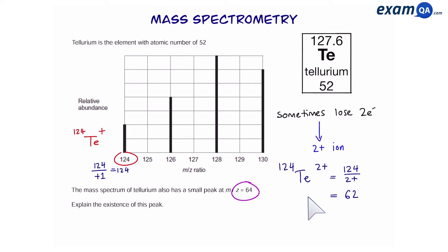In this question it says explain why there's a peak at m/z 64. So this could be because of a 128 Tellurium with a charge of 2+. The mass to charge ratio for this would be 64.